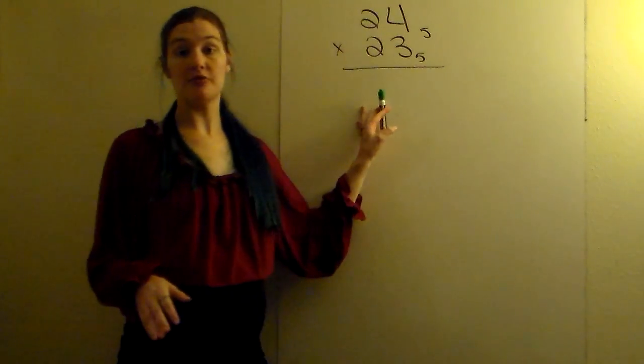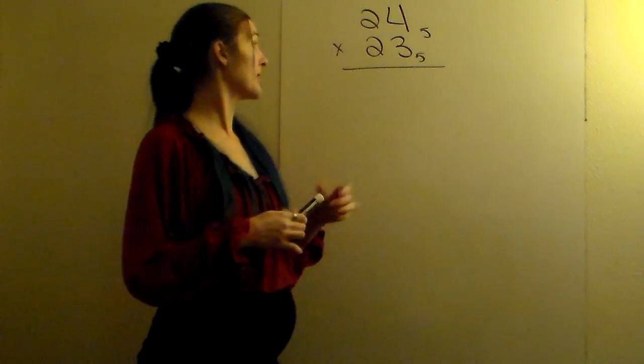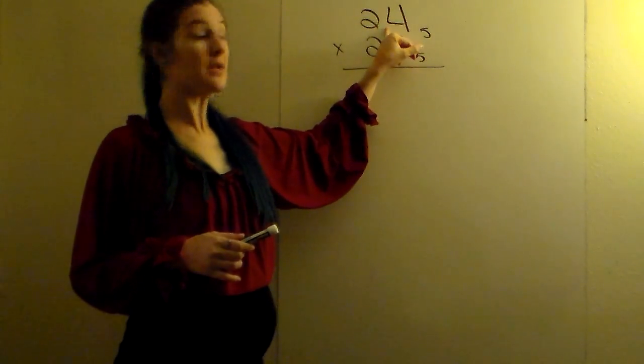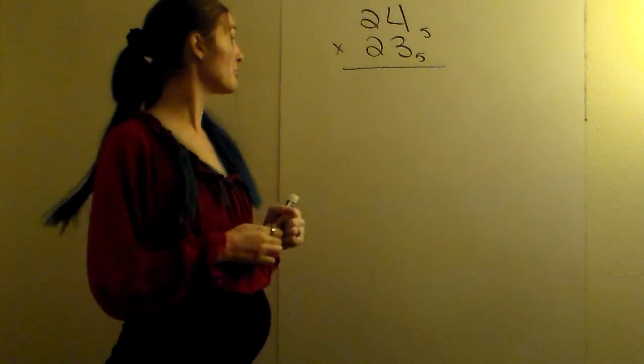So now we're multiplying in a different base. We're going to do base 5 here. I've got 24 base 5 times 23 base 5.